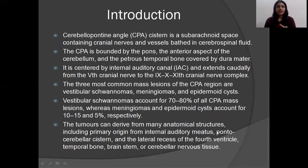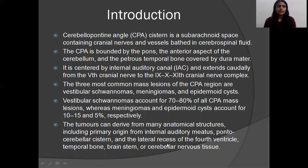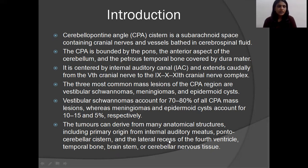The three most common lesions of CP angle are schwannoma, meningioma, and epidermoid cyst, in which schwannoma accounts for 70 to 80% — the most common tumor of CP angle. Tumors of the CP angle may arise from various anatomical structures, primarily originating from the internal auditory meatus, pontocerebellar system, lateral recess of the 4th ventricle, brain stem, and cerebellar nervous tissue.